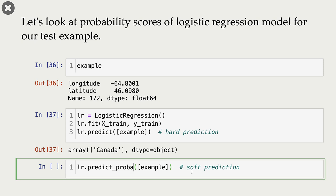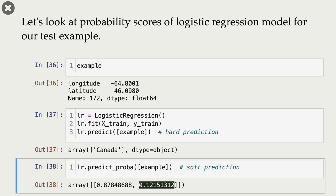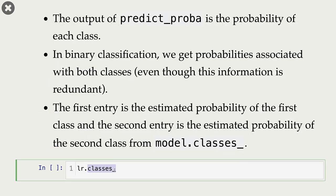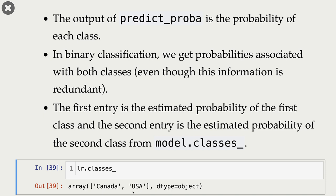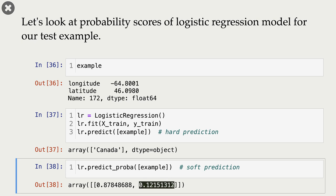Now let's get a soft prediction using predict_proba. We get these two numbers. Since we are working on a binary classification problem, we are going to get probability scores for both classes. The first score corresponds to class 0 and the second score corresponds to class 1. The classes_ attribute of the logistic regression object gives us the order of the classes — which class is considered negative and which is positive. In our case, class 0 (negative class) is Canada, and class 1 (positive class) is USA. So the first score corresponds to Canada and the second score corresponds to USA.